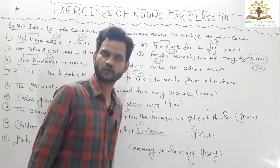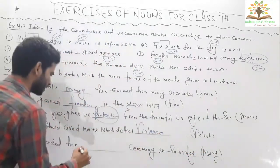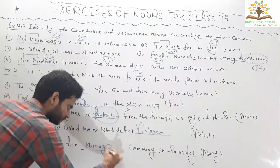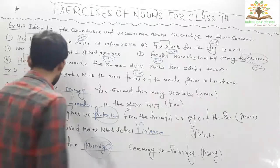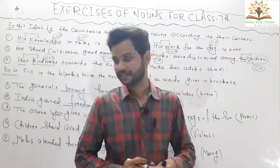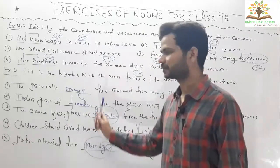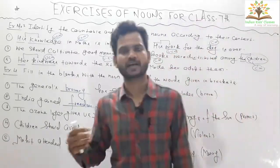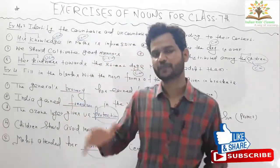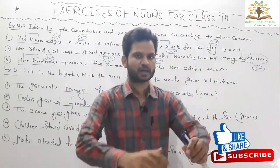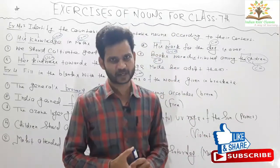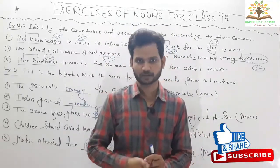Question five: 'Mohit attended her ___ ceremony on Saturday.' The given word is a verb — through this verb we can make the abstract noun marriage. So Mohit attended her marriage ceremony on Saturday. If you have any problems, write in the comment section. We have now completed the topic of nouns. The next lecture will be on adjectives — stay tuned and may God bless you.